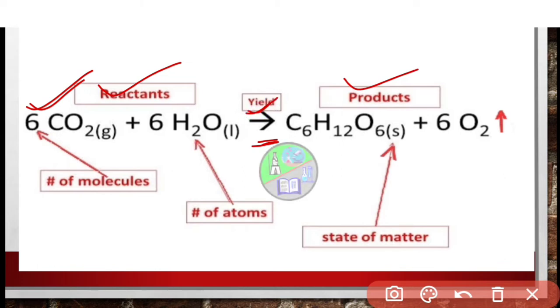In the bracket we can see G, L, S written. What are these? Actually these represent the physical state of the particular substance. And when any gas is released, instead of writing G, it is marked as an up arrow. And if any precipitate is formed as a product, then it is marked as a down arrow.